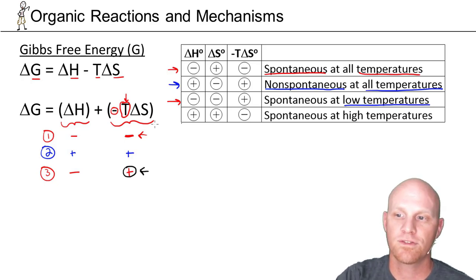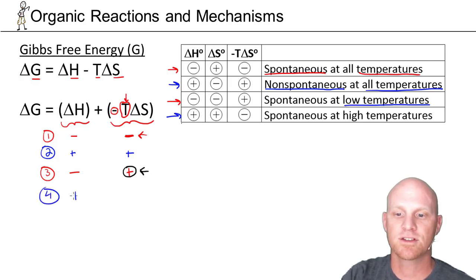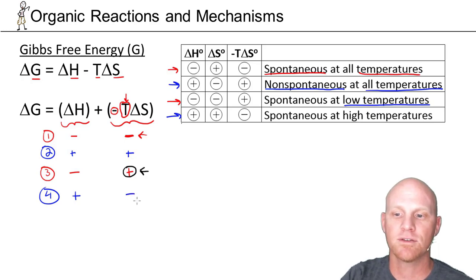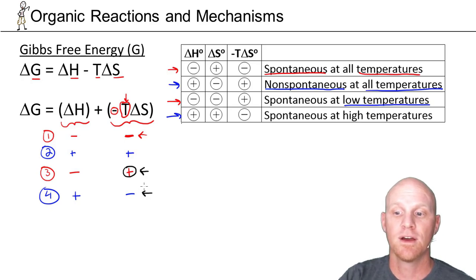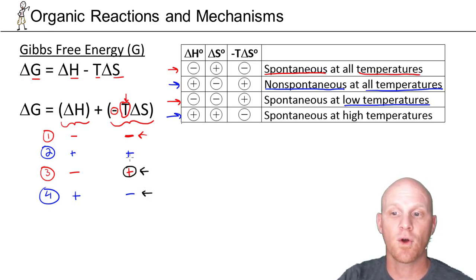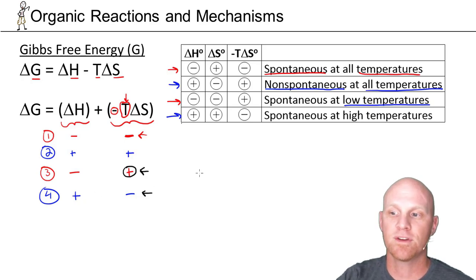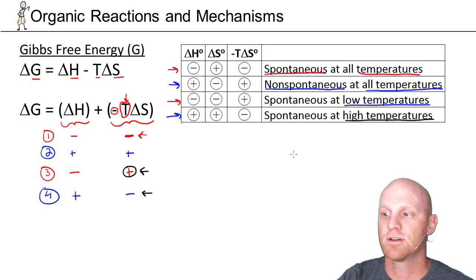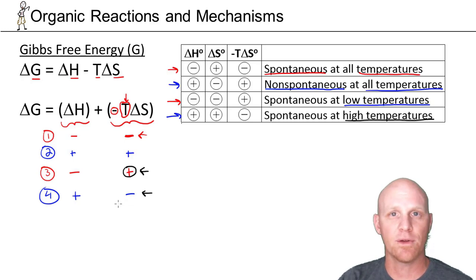In situation four, both delta H and delta S are positive — an endothermic reaction with positive delta S, so the second term, negative T delta S, comes out negative. Now I want the negative second term to dominate, so I want as high a temperature as possible. That way, negative T delta S becomes as large a negative number as possible, larger in magnitude than the positive delta H, and delta G comes out negative. This reaction is spontaneous at high temperatures.